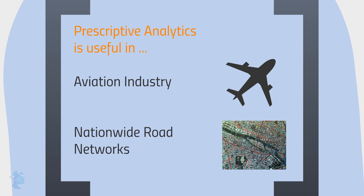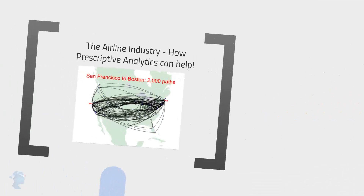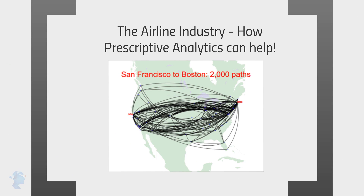To see how prescriptive analytics functions in the aviation industry, let's look at the following example. Airlines are always looking for ways to optimize their routes for maximum efficiency, which can mean billions of dollars in savings. With over 50 million commercial flights in the world every year — that's a flight every second — just a simple route between two cities like San Francisco and Boston has possibly 2,000 route options. So the aviation industry often relies on prescriptive analytics to decide what, which, and how they should fly their airplanes to keep costs down and profits up.